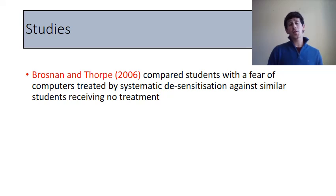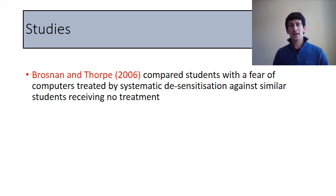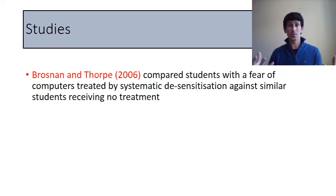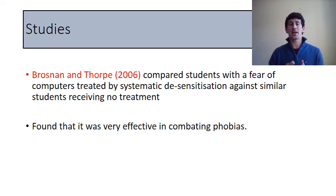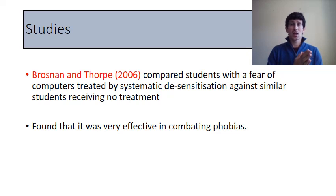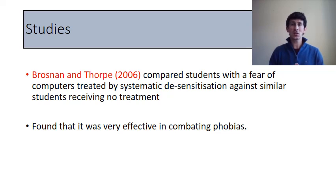Bronson and Thorpe conducted a study with technophobes — people who were afraid of computers. They had two groups: one that received systematic desensitization and another that received no treatment whatsoever. They found that those who experienced systematic desensitization — almost the vast majority of them — overcame their phobia of computers and were cured of being technophobes, clearly showing this treatment can be used to overcome certain phobias.